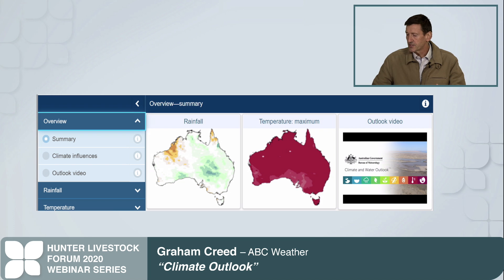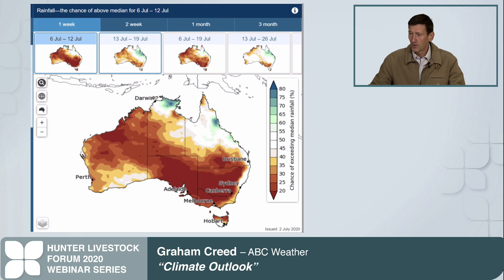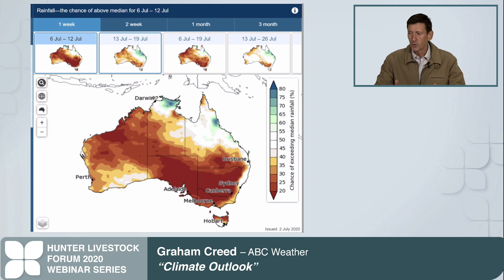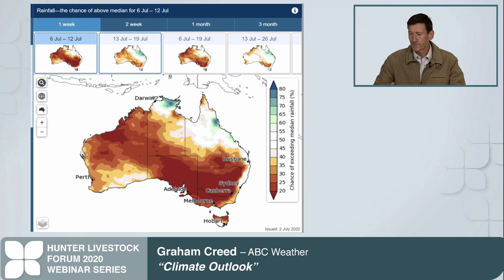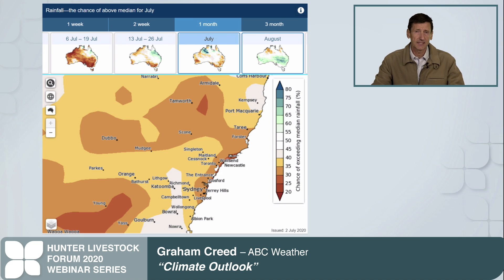Looking closer at these charts, we start with a national overview. The brown indicates lack of rainfall and the blue indicates the potential of median or above median rainfall. Across the top you can select a one-week, two-week, one-month, or three-month seasonal outlook — different options to look closer to home in a shorter time period or further out.